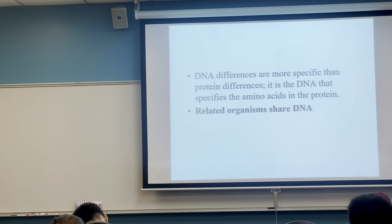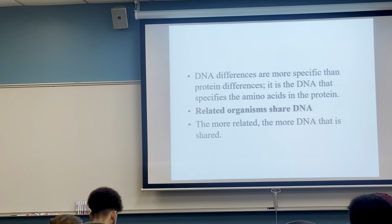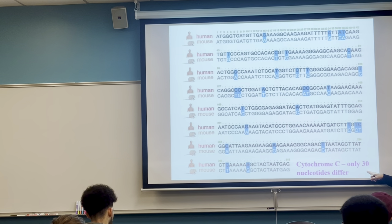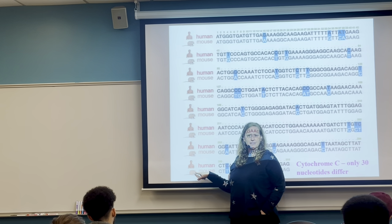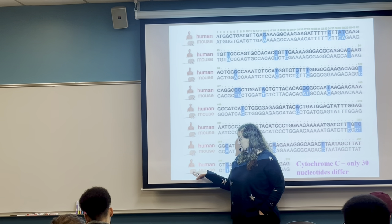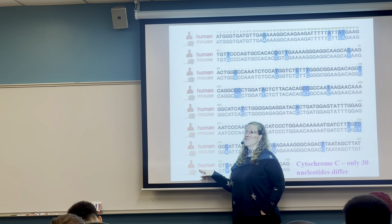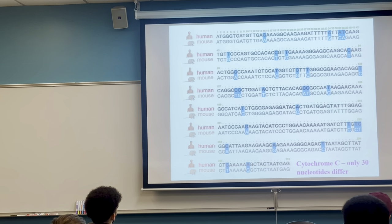There are applications within evolution to our own ecosystem services. Looking at cytochrome C between humans and mice, there are only 30 different nucleotides. Even though we look really different — our genetics are expressed very differently, and mice are tiny while we're big — we are both vertebrates with the same four-limb structure. Only 30 nucleotides vary in the expression of this particular protein. That's pretty fascinating.